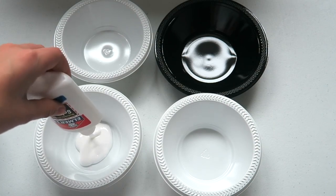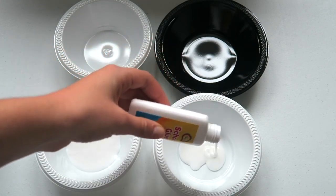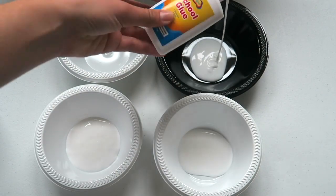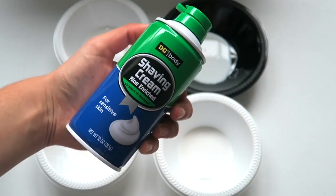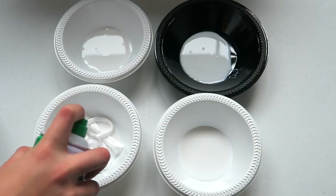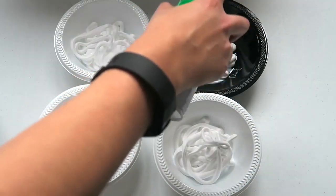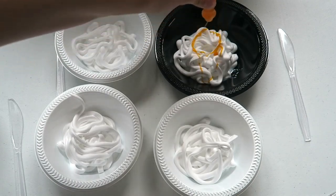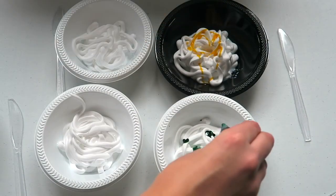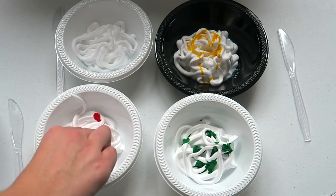Today we are making a rainbow fluffy slime. For this, all you have to do is put equal parts of shaving cream and school glue into containers. Then I put yellow, green, blue, and red food coloring in these bowls and mix them all together. Then I added in some contact solution.